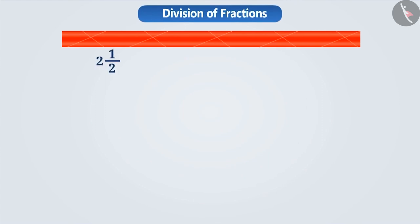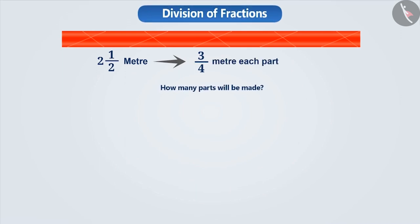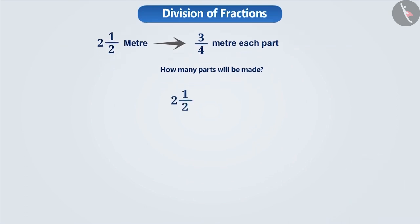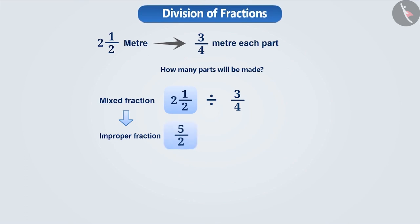Now suppose we have two and a half metre long ribbon. If we want to cut it into pieces measuring three-fourth metre each, then how many parts will we be able to make? Here too, we have to divide two and a half metres by three-fourth. Notice that two and a half is a mixed fraction. In division of fractions, we have to first convert mixed fractions into improper fractions. Here we will write two and a half as five by two. So now the division will become five by two divided by three by four.